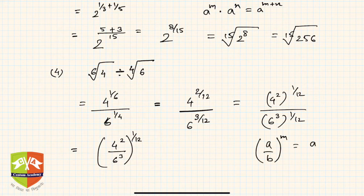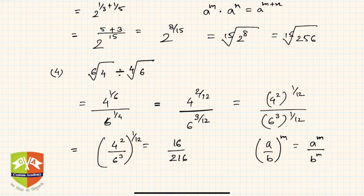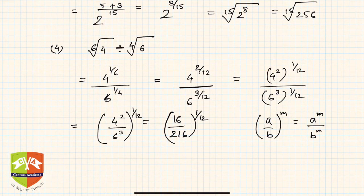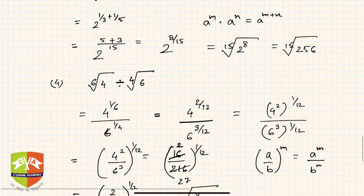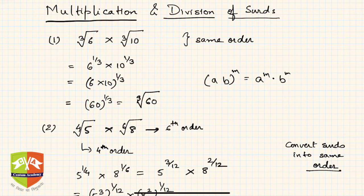We have four-squared to the power one-by-twelve, divided by six-cubed to the power one-by-twelve, which gives four-squared over six-cubed, all to the power one-by-twelve, using the rule: (a/b) to the power m equals a to the power m over b to the power m. That is 16 over 216, to the power one-by-twelve. Simplifying, 16 = 8×2 and 216 = 8×27, so it reduces to 2/27 to the power one-by-twelve, giving the twelfth root of 2/27.